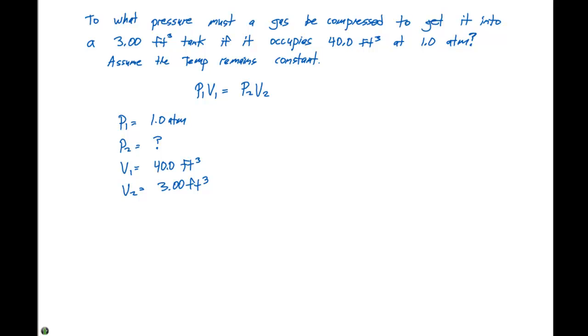So if we plug these values into our particular expression, we'll see that 1.0 atmospheres times 40.0 feet cubed is gonna equal P2, which is what we're trying to solve for, times our second volume, which is 3.00 feet cubed.